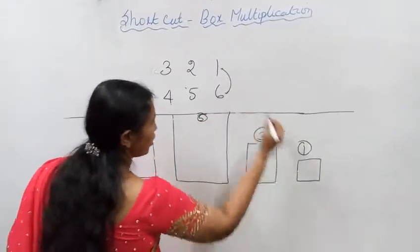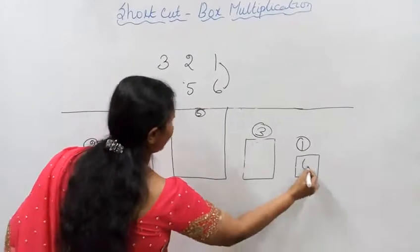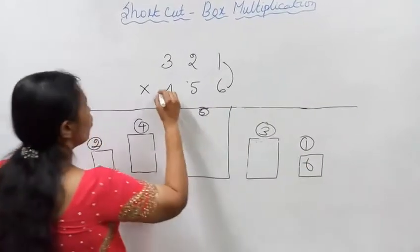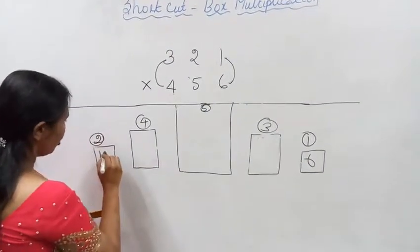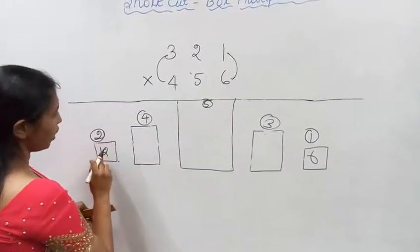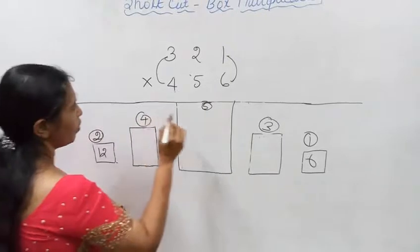1st box: 6 ones are 6. 2nd box: 4 threes are 12.